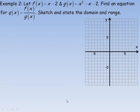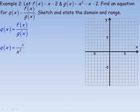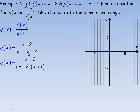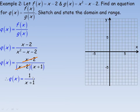Moving to example two, f of x is again x minus 2 and g of x is the same function as in example one. We're asked to find q of x, defined as f of x divided by g of x. Substituting and factoring the denominator, x squared minus x minus 2 becomes x minus 2 times x plus 1. Dividing out the common x minus 2 factors, q of x simplifies to 1 over x plus 1.